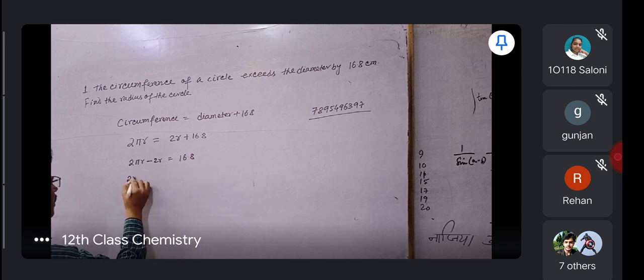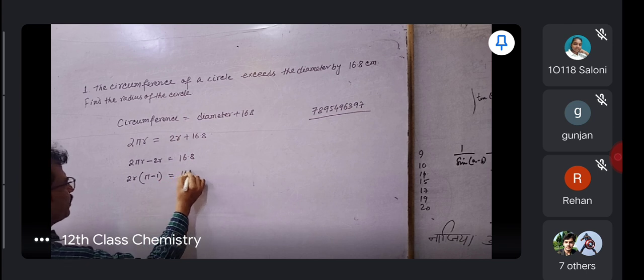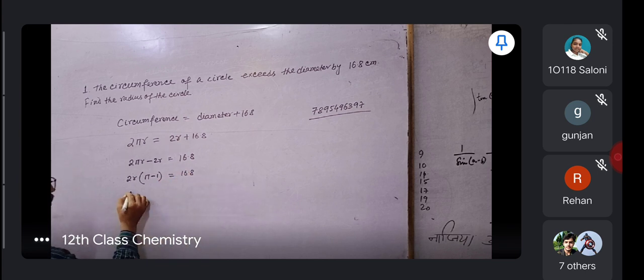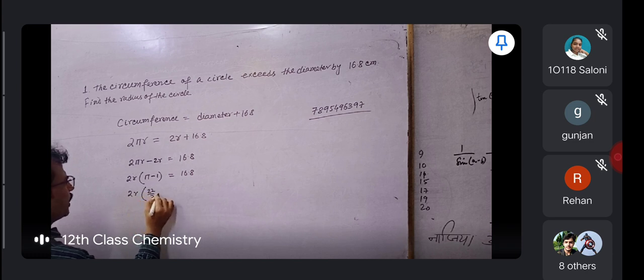And 2 r equals pi minus 1. Pi means 22 by 7 minus 1.